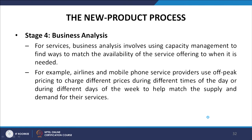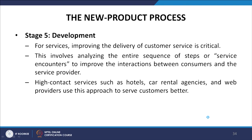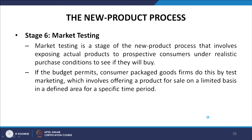Stage five is development, which turns the idea on paper into a prototype — a demonstrable, producible product. This involves manufacturing the product efficiently, performing laboratory and consumer tests to ensure it meets the standards established in the protocol, and conducting safety tests. For example, car manufacturers conduct extensive safety tests by crashing cars into concrete walls. For services, improving the delivery of customer service is critical, involving analysis of the entire sequence of service encounters.